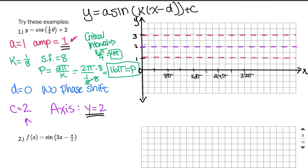Because we are graphing cosine, the parent cosine graph always starts at the max and ends at the max to complete a full cycle. So this starts at the max, ends at the max after one full period of 16π. At each critical interval of 4π, it hits the axis, the minimum, the axis, and returns to the max. We then continue for a second full cycle out to 32π, hitting the same critical points along the way.